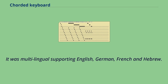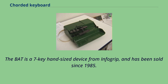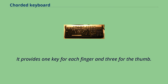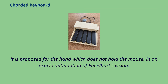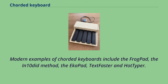The BAT is a seven-key hand-sized device from InfoGrip, sold since 1985. It provides one key for each finger and three for the thumb, and is proposed for the hand that does not hold the mouse — in exact continuation of Engelbart's vision. Modern examples of chorded keyboards include the FrogPad, the Intended Method, the Eco Pad, TextFaster, and HotTyper.